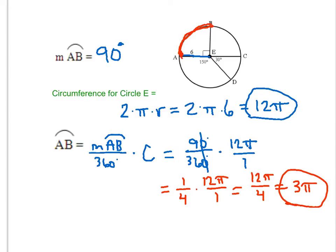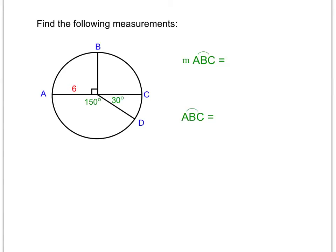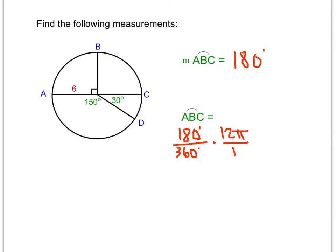In this example we find the measure of arc ABC. Looking at the picture, arc ABC is a semicircle, so the measure of arc ABC is 180 degrees. Now I'll use that to find the arc length of ABC using the formula: 180 over 360, multiplied by the circumference, which we found is 12π.